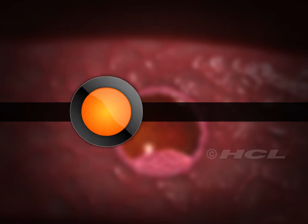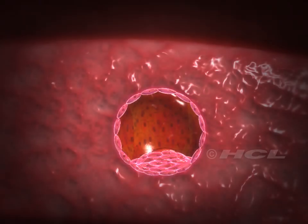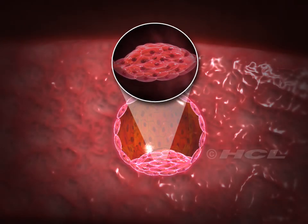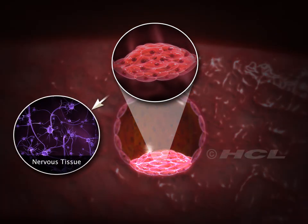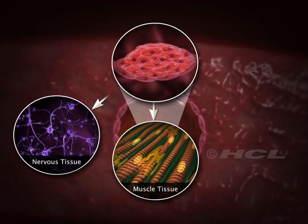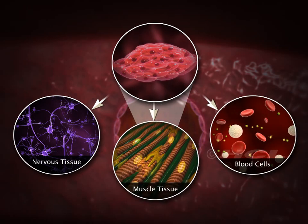Some cells called stem cells are present in the inner cell mass. The stem cells are pluripotent, which means that they can give rise to any type of tissue except those of the placenta and the extra-embryonic membranes.